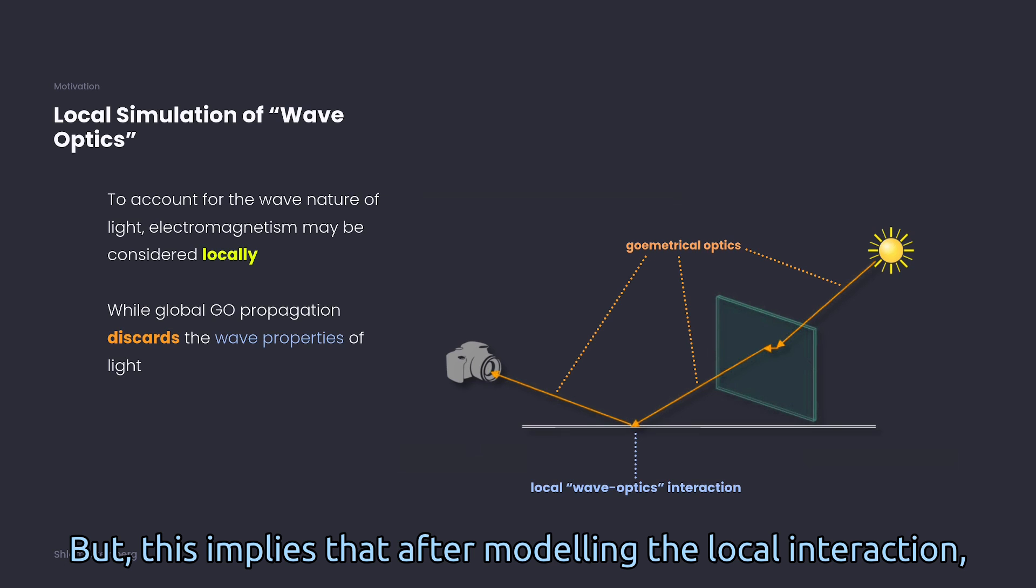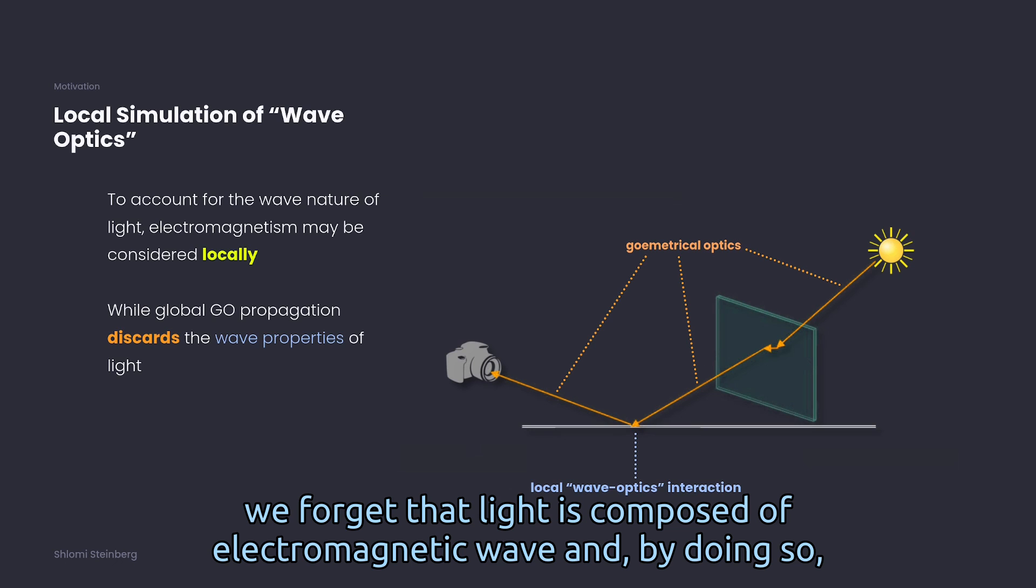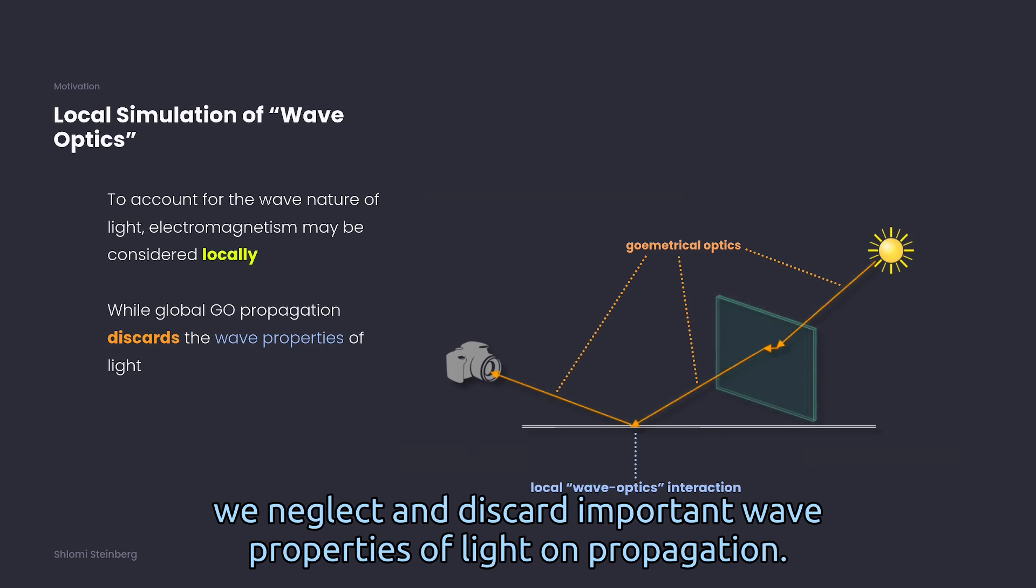But this implies that after modeling the local interaction, we forget that light is composed of electromagnetic waves, and by doing so, we neglect and discard important wave properties of light on propagation.